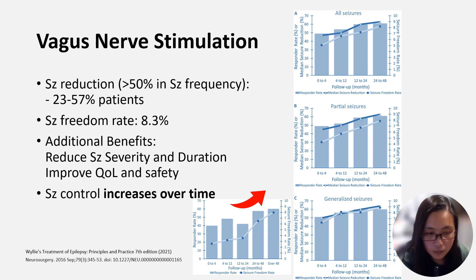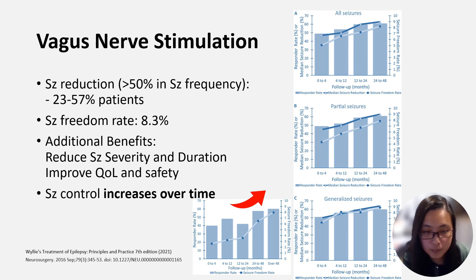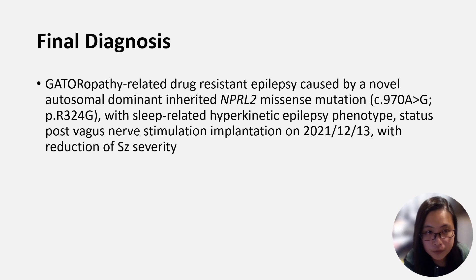VNS treatment has a chronic progressive prophylactic effect in which total seizure counts are reduced more following chronic VNS implantation. Additional benefits such as reducing seizure severity and duration and improving quality of life and safety have been reported. Our patient received VNS implantation. Though seizure frequency did not change much, he reported improvement in severity and duration of his seizures and improvement of quality of life.